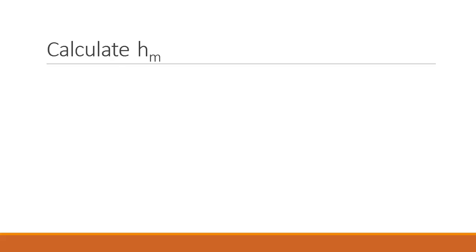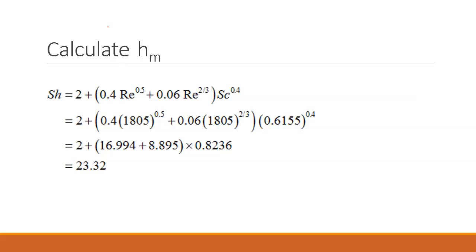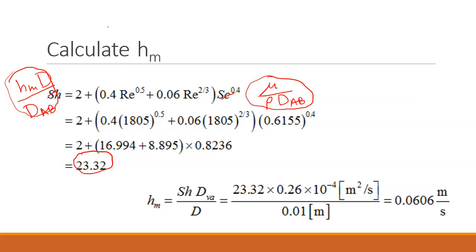So now we've got all the properties. We need the equation. So again, the equation, this Sherwood number is nothing but the equivalent Nusselt number, which is HM D over DAB. And then Schmidt number is mu over rho DAB. So we plug in all these quantities that we just calculated. And that gives us HM times D over DAB, this guy equal to 23.32.